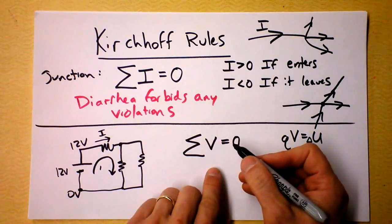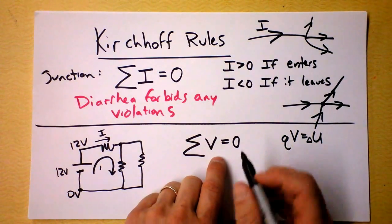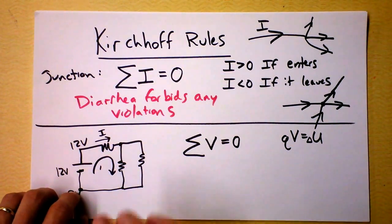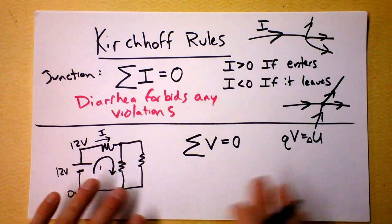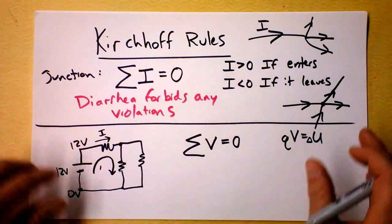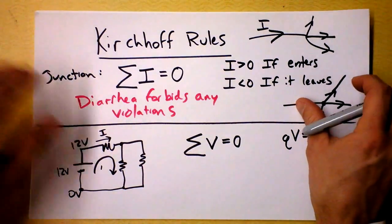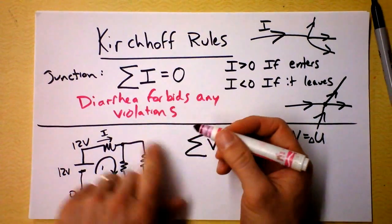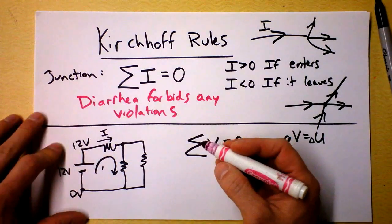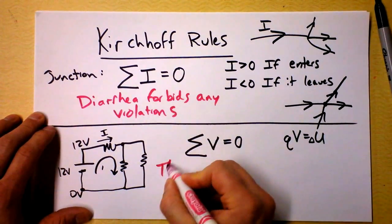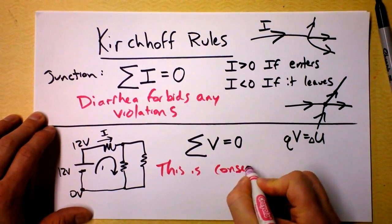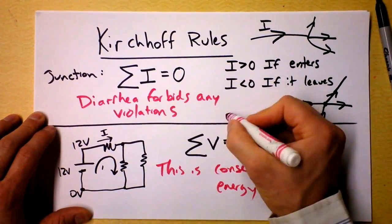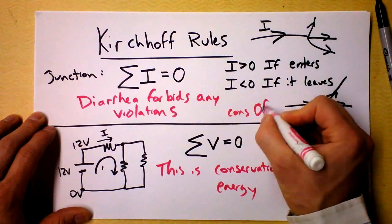So this battery is giving energy into the system and these resistors are taking it away as heat. It's my preference to define zero right before the battery, but we're about to solve one really soon that has two batteries. So this is conservation of energy, and the junction rule is conservation of charge.